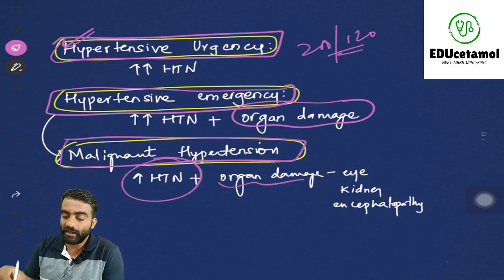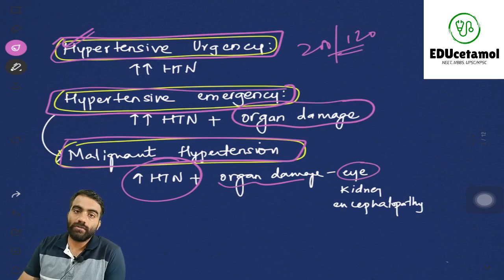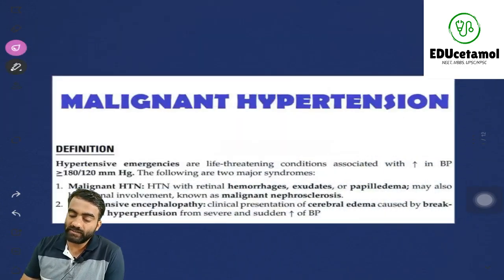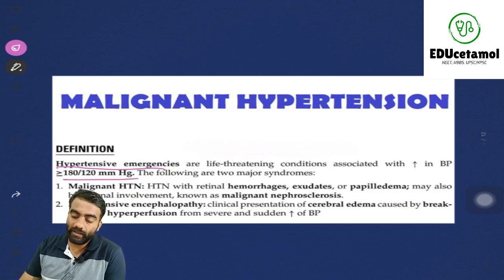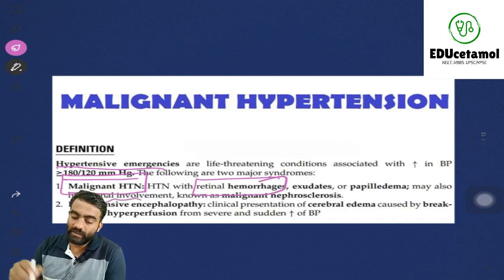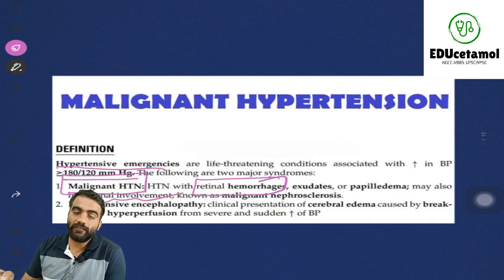In malignant hypertension, there is increased hypertension along with organ damage — for example, retinal damage in the eye, damage in the kidney which is malignant nephrosclerosis, or encephalopathy. Malignant hypertension is defined as hypertensive emergency where there is retinal damage in the form of exudates and papilledema — that is disc edema — and additionally there is renal involvement. You have to know the subtle differences between hypertensive urgency, hypertensive emergency, and malignant hypertension.